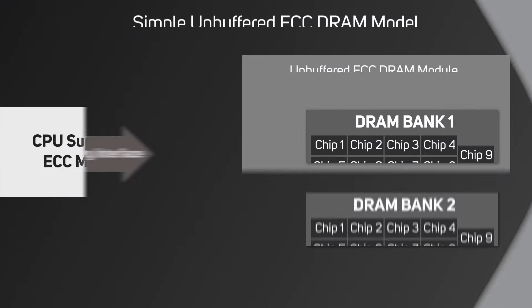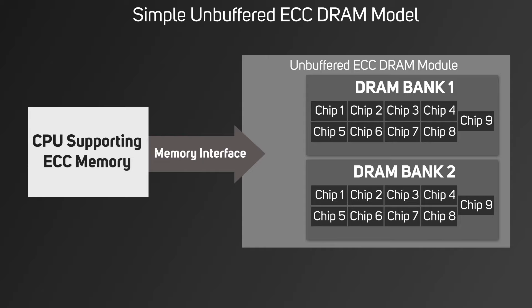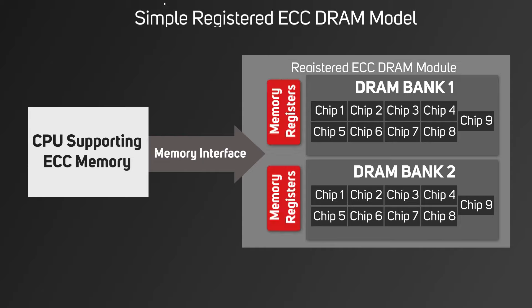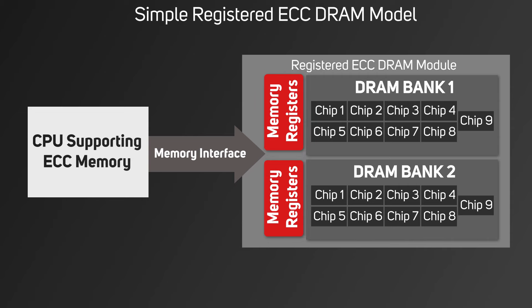For higher end server systems there may also be the option of ECC registered memory. This is a buffered memory where a register is located between the system's RAM and the memory controller. Like ECC, there will be a slight performance reduction due to the buffering, but more importantly this buffering reduces the strain on the CPU's memory controller, because it points to the dedicated intermediary register versus accessing the RAM directly.